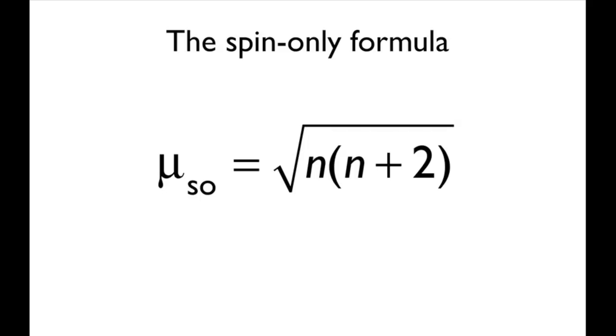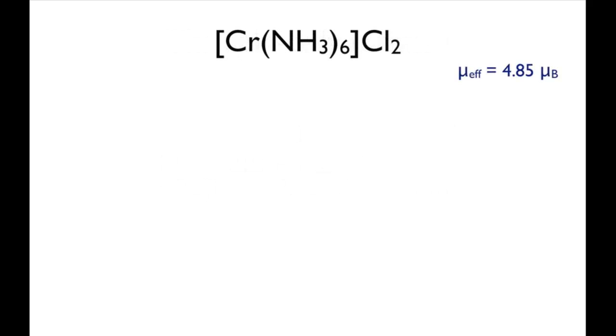For example, hexaamine chromium 2-plus dichloride has a measured magnetic moment mu effective of 4.85 Bohr magnetons. We can use this information to determine whether the octahedral cation in this compound is a high-spin complex or a low-spin complex.